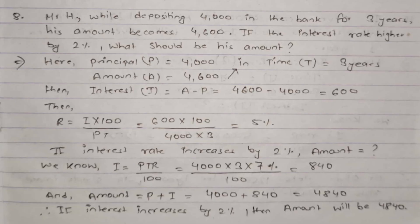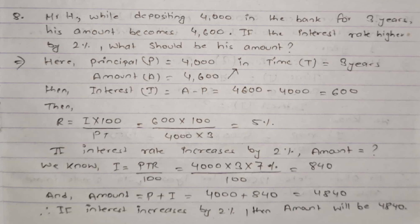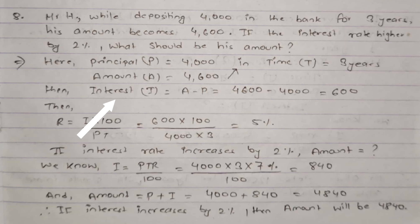Now question number 8: Mr. H deposits 4,000 in the bank for 3 years and his amount becomes 4,600. If the interest rate is higher by 2%, what will be his amount? Given: principal = 4,000, amount = 4,600, time = 3 years. Interest = 4,600 − 4,000 = 600. Using the rate formula r = I × 100 / (P × T) = 600 × 100 / (4,000 × 3) = 5%. The original rate of interest is 5%.